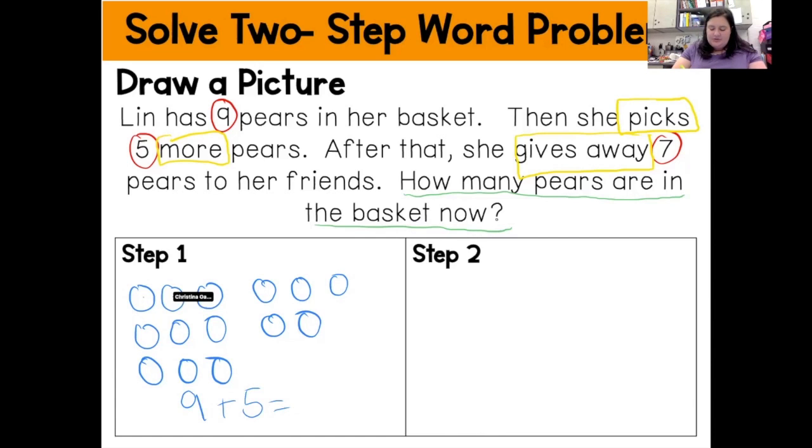So one, two, three, four, five, six, seven, eight, nine, ten, eleven, twelve, thirteen, fourteen. So Lin has 14 pears right now. So I'm going to go ahead and circle number 14 because I need to bring 14 over for step two.